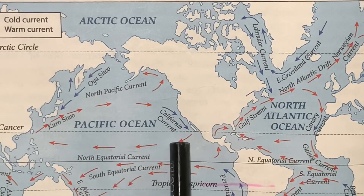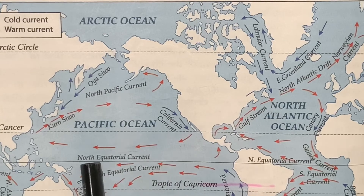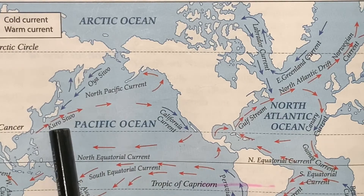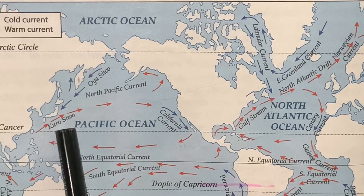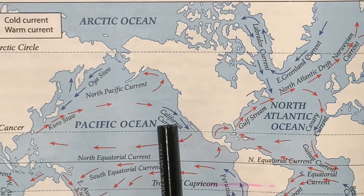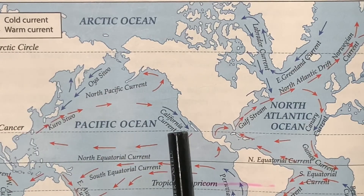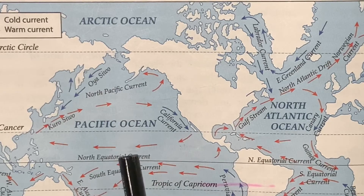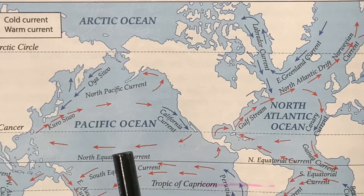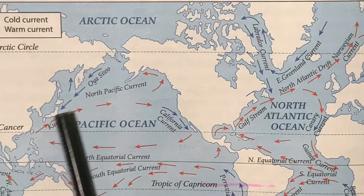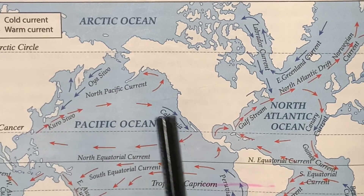Here you can see this red arrow showing the north equatorial warm current moves upward as the Kuroshio current. Then it finally moves again southward as the cold California current and merges with the north equatorial current. This mass of water moves in a clearly defined direction throughout the year.